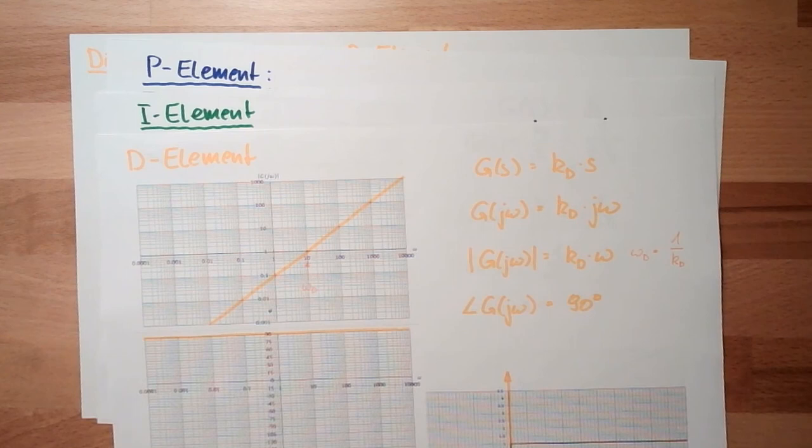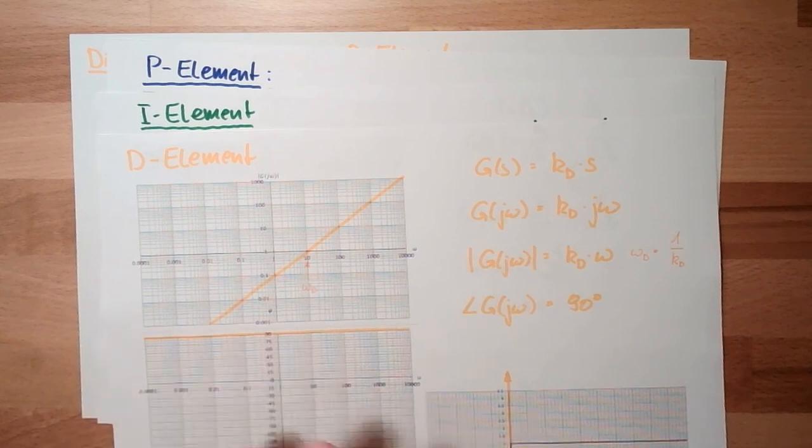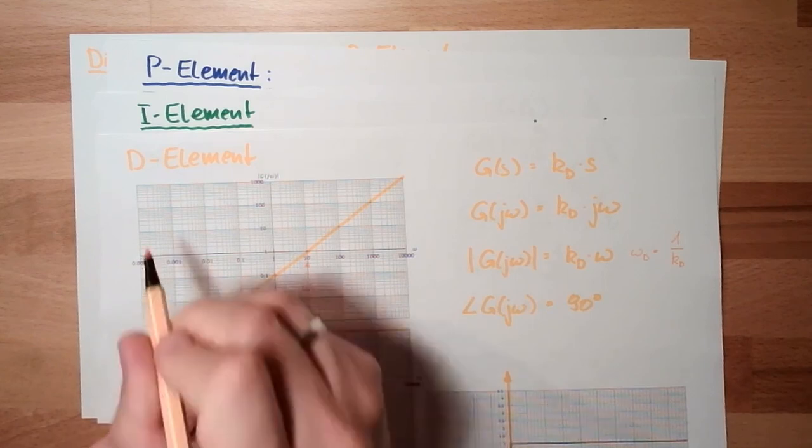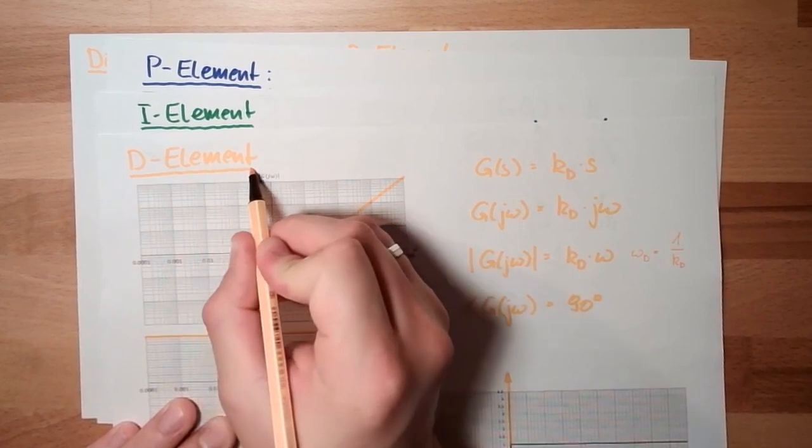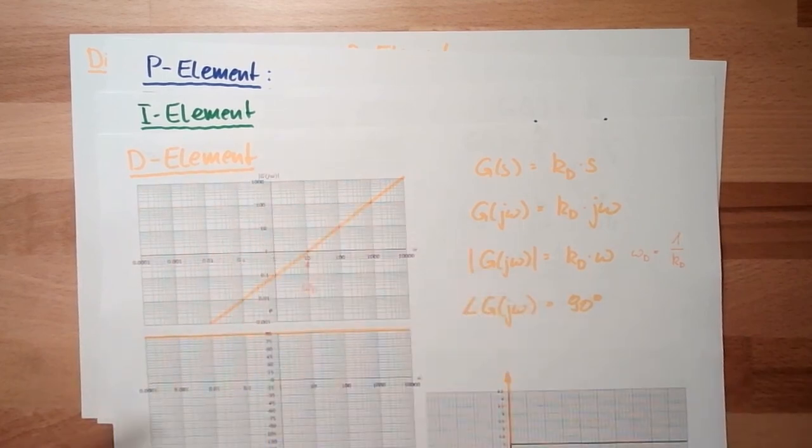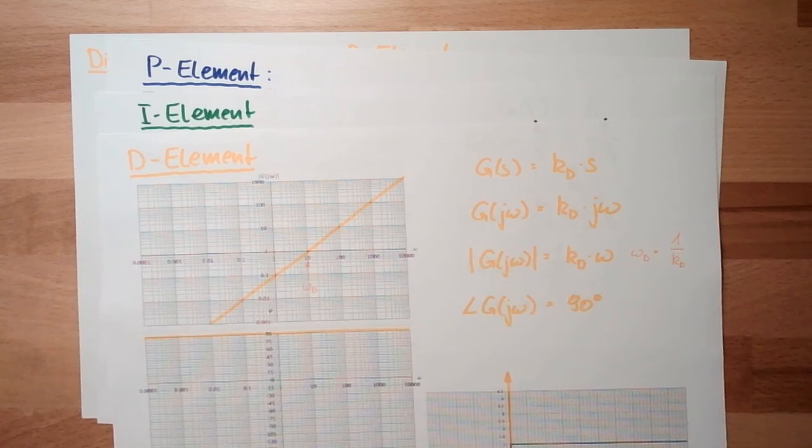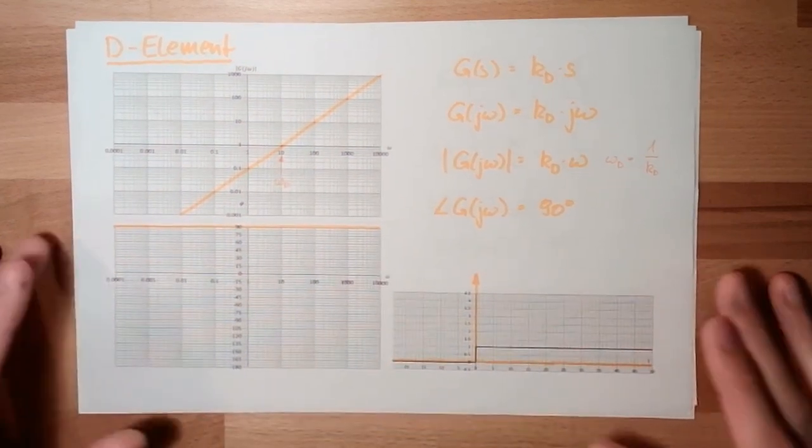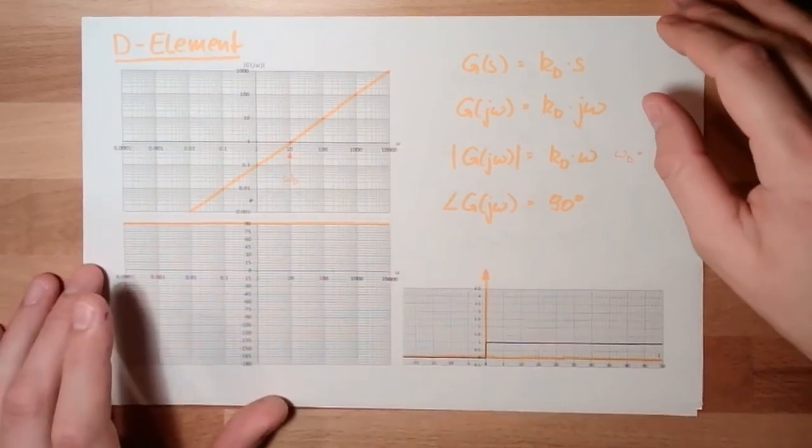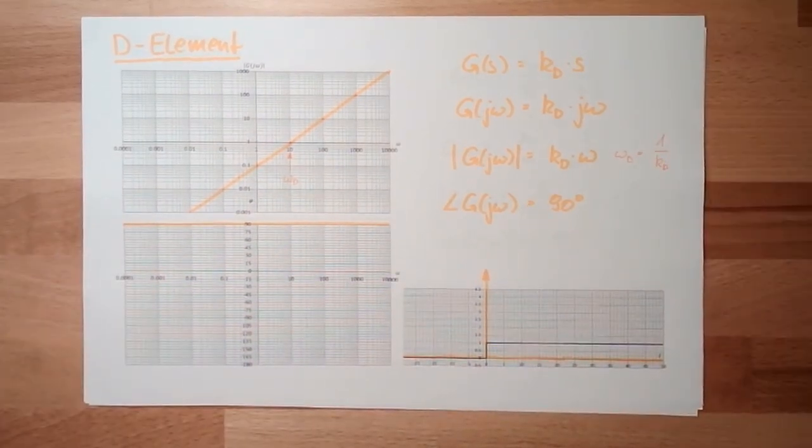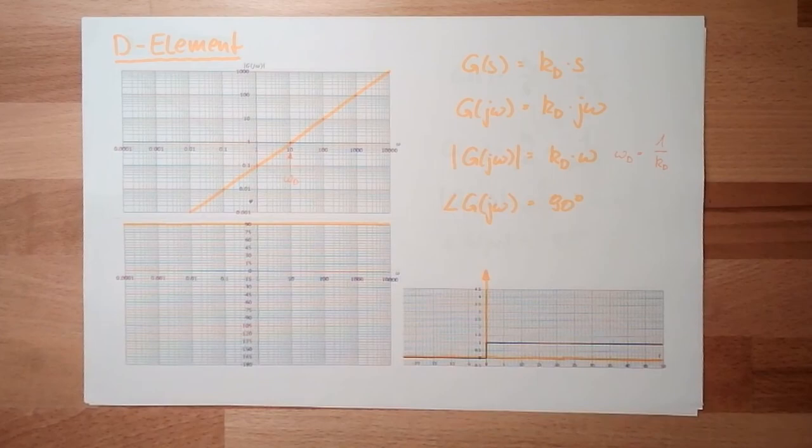And if we have energy storage inside a system, we do not have these pure elements, we do have elements which will be a little bit delayed. So this is why it's called a delay system. And next time we are going to talk about delay system first order or PT1 element. For this video, thank you very much for listening and goodbye.